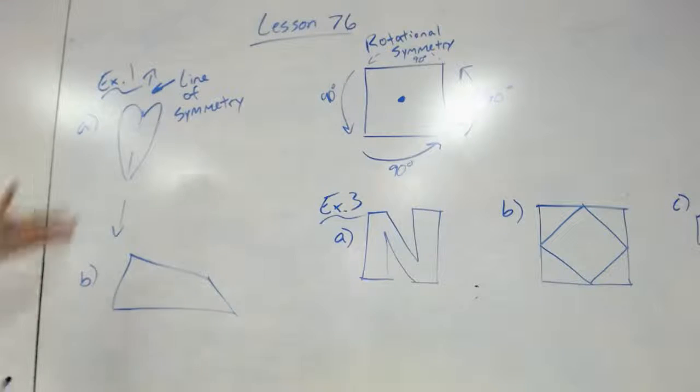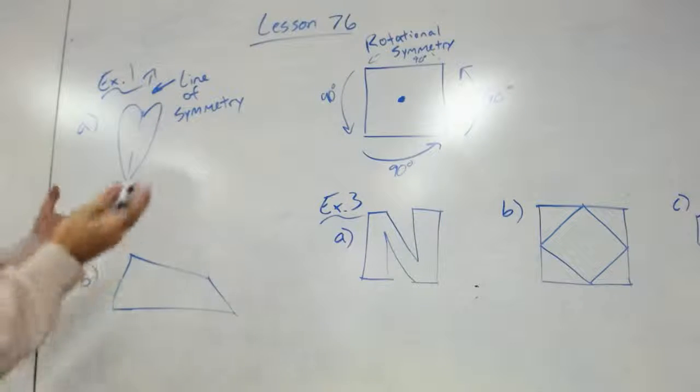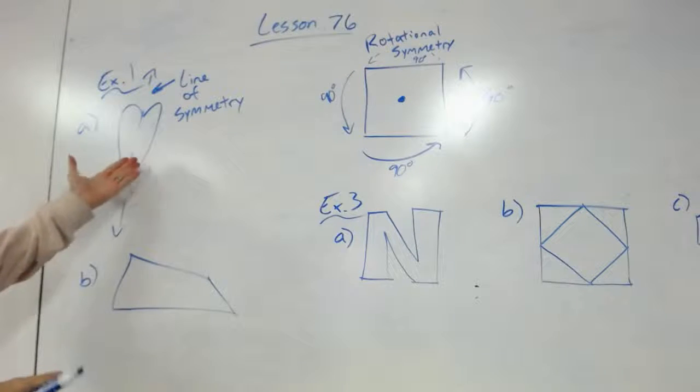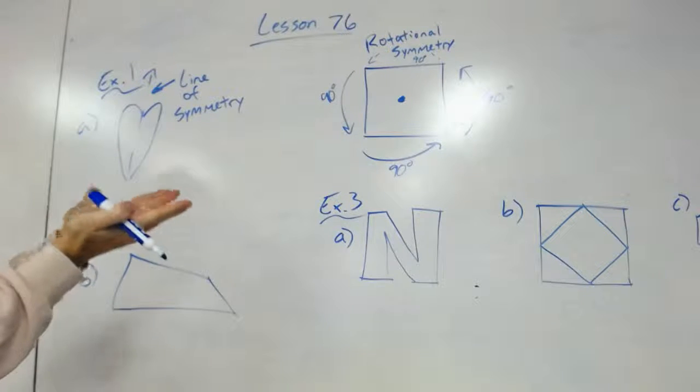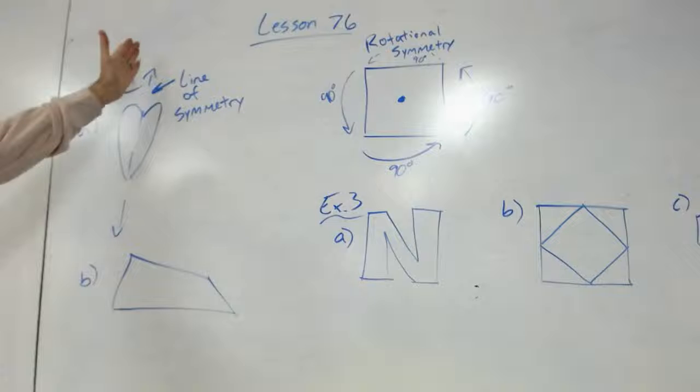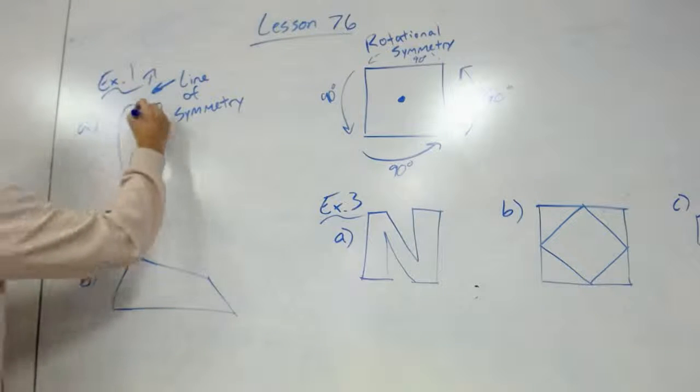So for example, we have a nice little heart here. A line of symmetry simply means that, say this was a piece of paper, if we folded it together, it would be the same image on both halves.